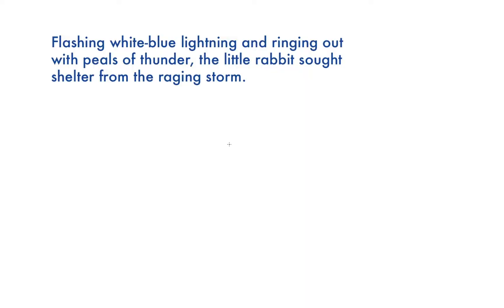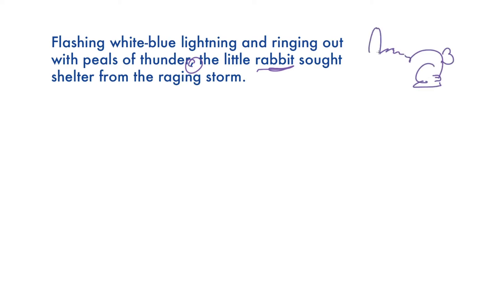So what is a modifier placement error? Consider: 'Flashing white-blue lightning and ringing out with peals of thunder, the little rabbit sought shelter from the raging storm.' You might look at that sentence and think there's nothing grammatically wrong here — but it's a logically impossible sentence. The first noun after the comma is 'rabbit,' so we're actually saying the little rabbit is flashing white-blue lightning and ringing out with peals of thunder. We've got an impossible thunder bunny here.